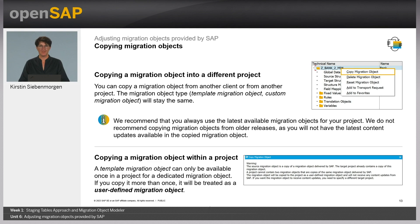You can copy a migration object from another client or another project. The migration object type — whether it's a template migration object or a custom migration object — will stay the same. It is possible to copy a migration object from projects created in other releases; in this case the link to the template is not available anymore. We recommend always using the content of the current release for your project, as you will not have the latest content updates available in copied migration objects. If you copy a migration object within a project, please be aware that a dedicated template migration object can only be available once in a project. If you copy it more than once or if it's already available in the project, it will be treated as a user-defined migration object.